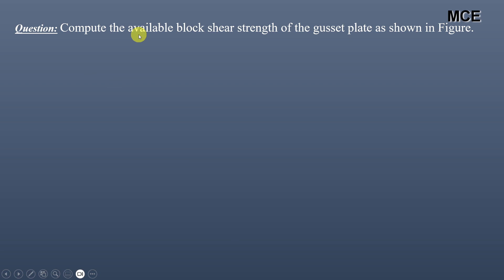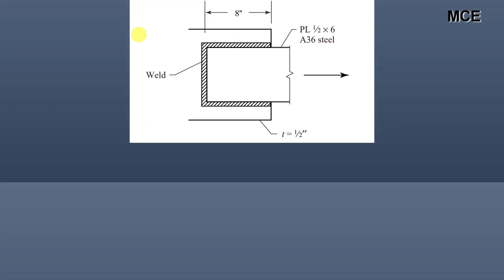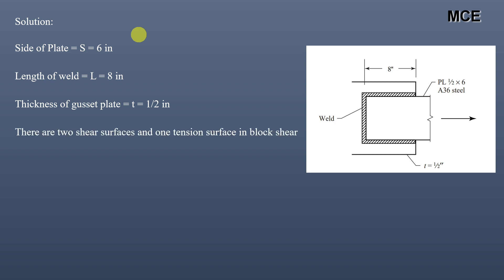The second question asks us to calculate the available block shear strength of a gusset plate as shown in the figure. This plate is 6 inches × 1/2 inch, the length of the weld is 8 inches, and the thickness of the gusset plate is also 1/2 inch. We again use both LRFD and ASD methods.